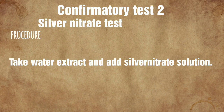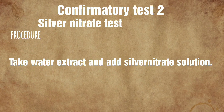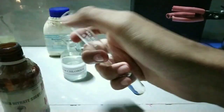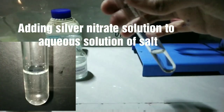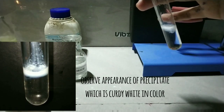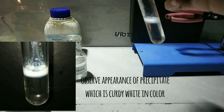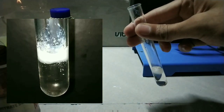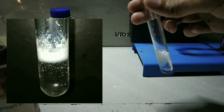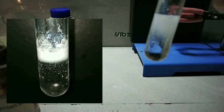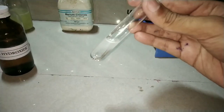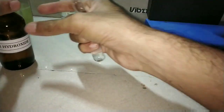The second confirmatory test is the silver nitrate test. Here we take some salt solution and add silver nitrate solution into it. I have already taken the aqueous solution of the salt and now I am adding silver nitrate solution. You can see the development of a curdy white precipitate.